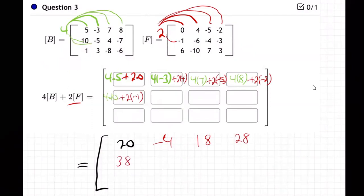And four times minus five and two times minus six. Two times minus six, what's that? Minus 20 minus 12, minus 32.